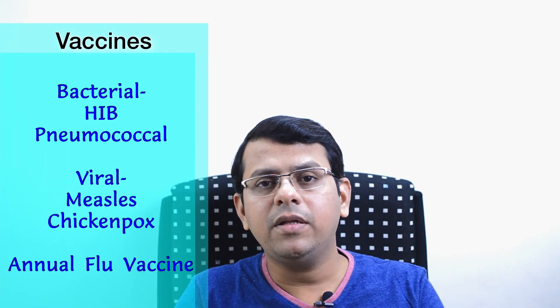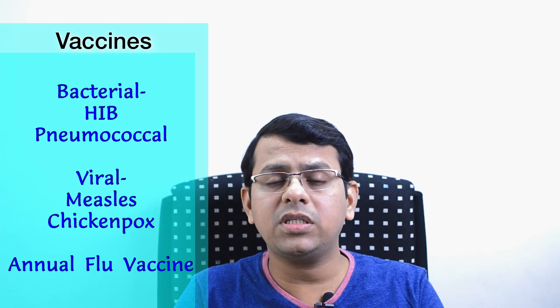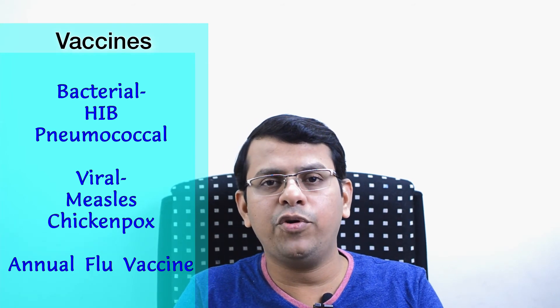Smoking should strictly be avoided, because smoking in the household can give rise to pneumonia in children. Children in the vicinity of smokers are considered to have passive smoking, which may impair their lung defenses and lead to pneumonia. Apart from these measures, there are vaccines against certain bacteria, especially Haemophilus influenzae B and Streptococcus pneumoniae or Pneumococcus, which are important causes of pneumonia.